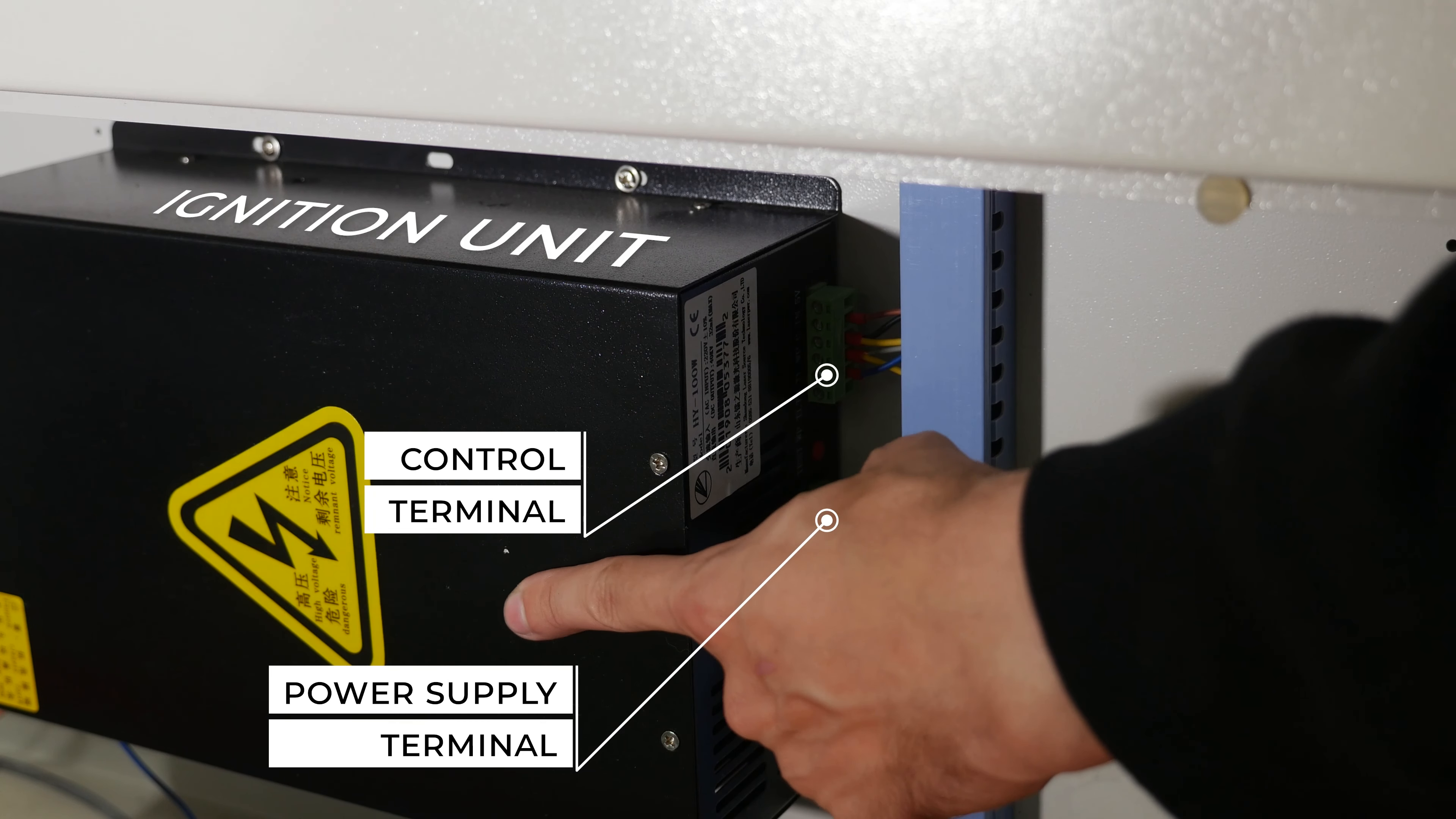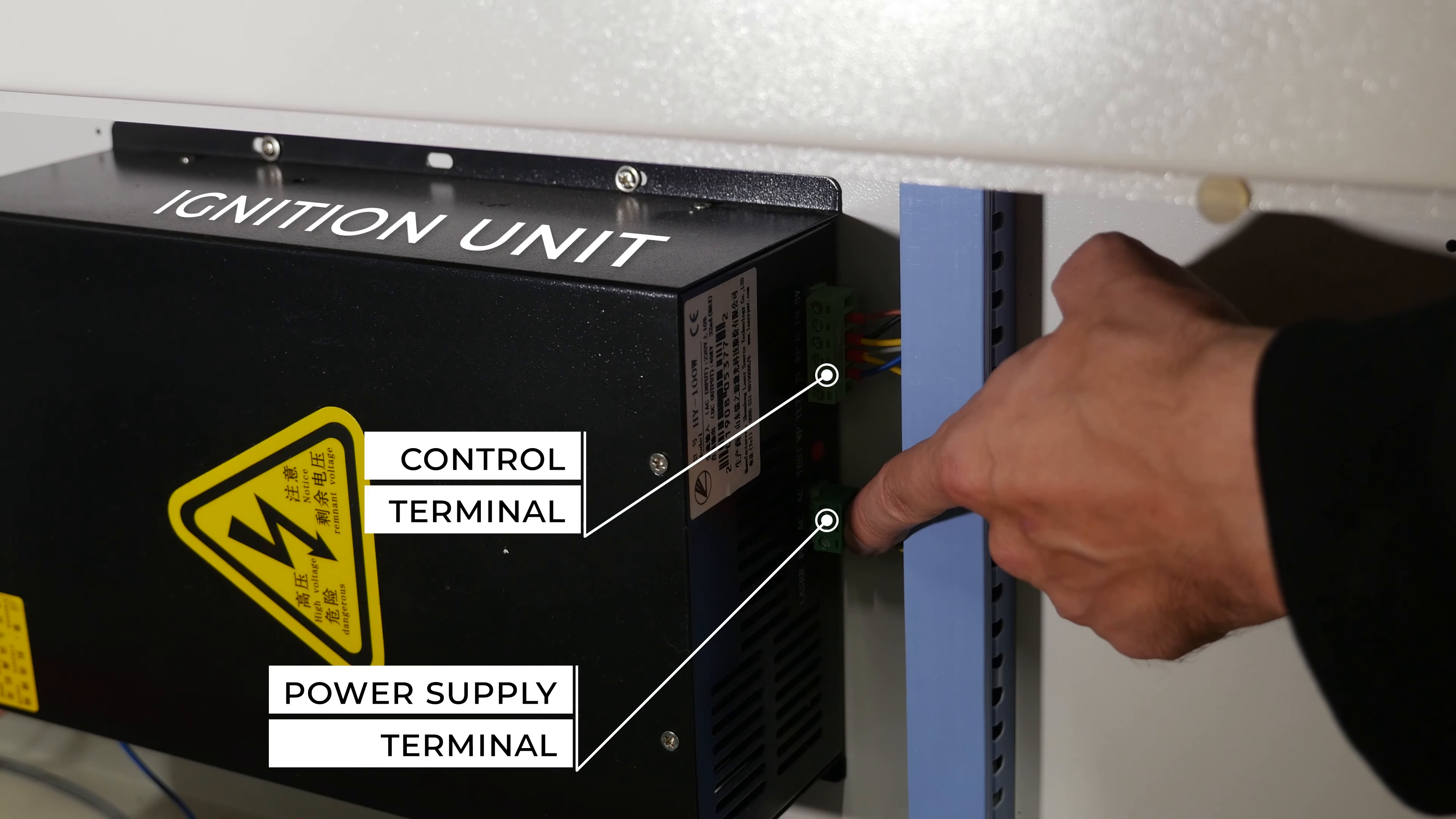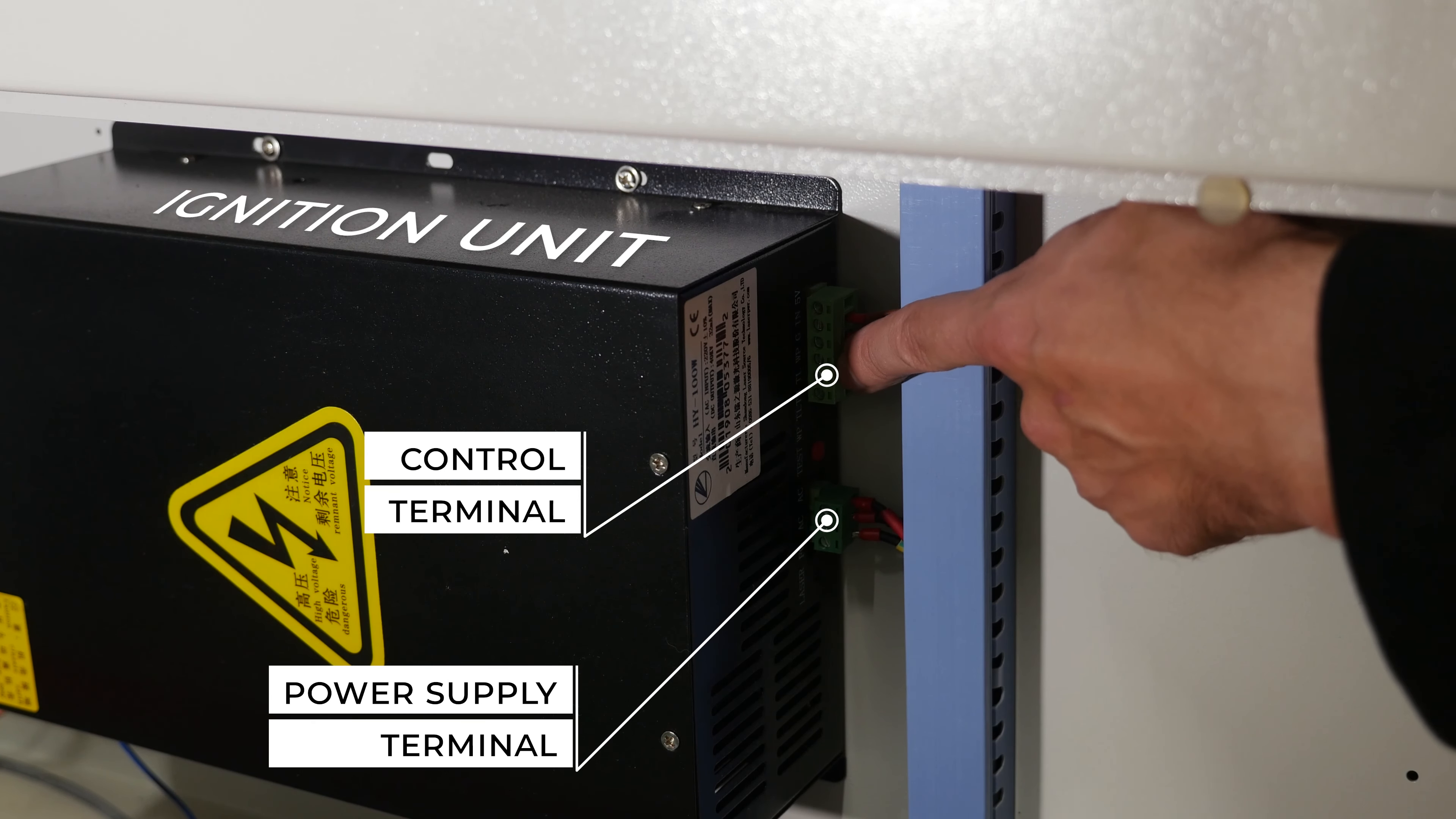An ignition unit has two terminals on the right side, the power supply terminal and the control terminal. They must be switched off before dismantling the unit.